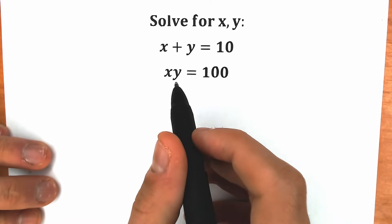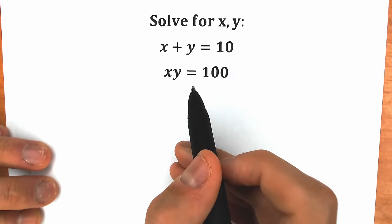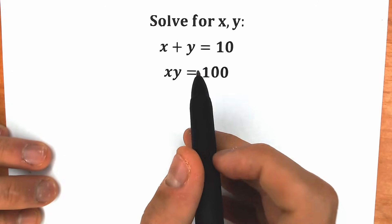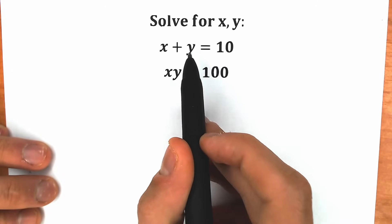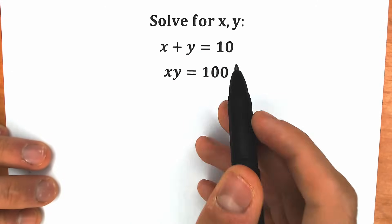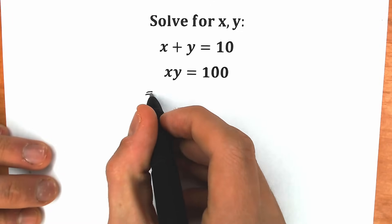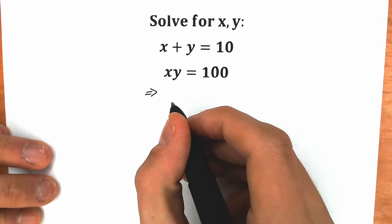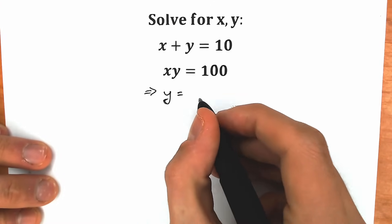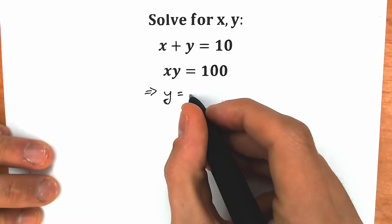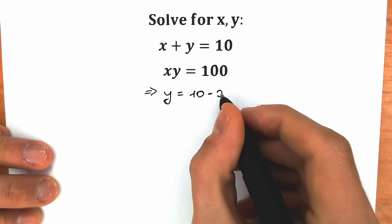First of all, let's look closely at our first equation: x plus y equals 10. From here we can express y. So y equals 10 minus x.